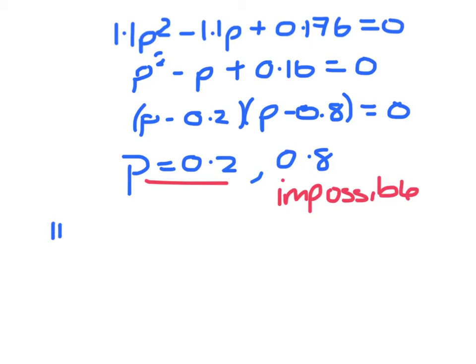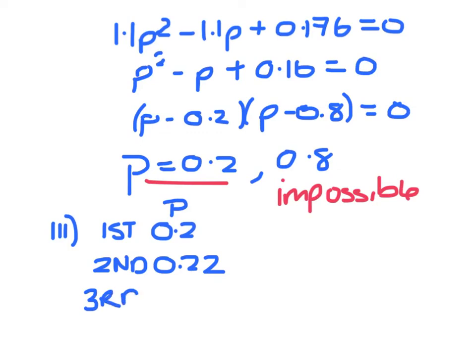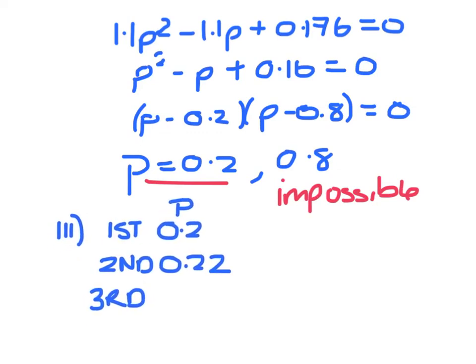The probability that he passes is 0.2. It increases by 10% each time. So his first attempt probability of p will be 0.2. At his second attempt it will be 0.22, and at his third attempt it will be 0.242.